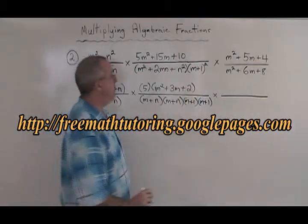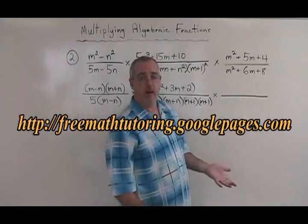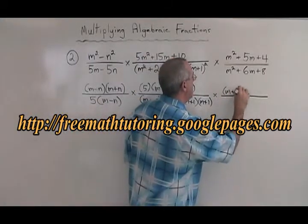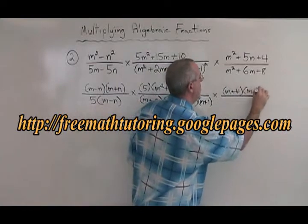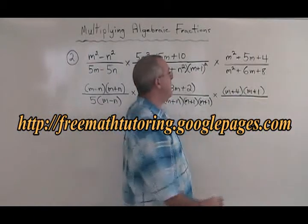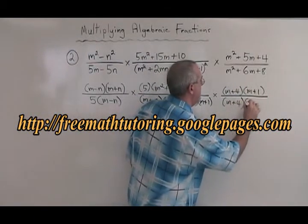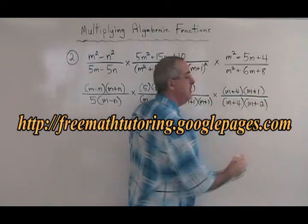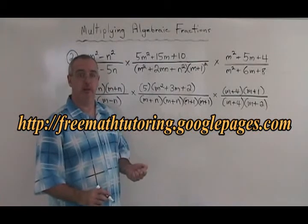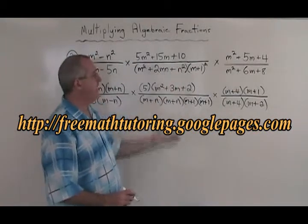I still have more factoring to do. What two numbers multiply to give 4 and add to give 5? They are 4 and 1, giving (m plus 4)(m plus 1). What two numbers multiply to give 8 and add to give 6? That is 4 and 2, giving (m plus 4)(m plus 2). I'll remind you: if you're shaky on this factoring, this process is impossible. You have to be very strong with your factoring techniques in order to make this work.